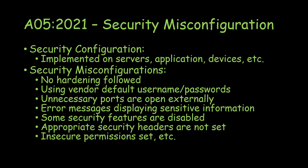Another misconfiguration is unnecessary ports open externally. For example, if a web application and database are running on the same server, the database port should only be open locally — not externally — since the application can reach it internally. However, certain ports like SSH port 22 are sometimes whitelisted on the firewall and open externally so users can connect from outside without going through the internal network.